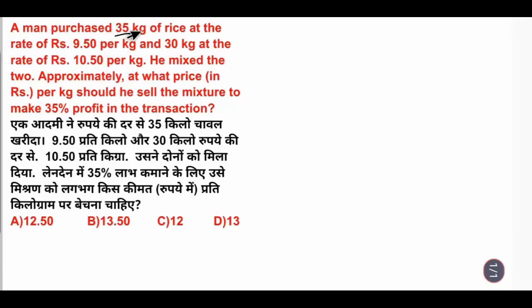A man purchased 35 kg of rice at the rate of Rs. 9.50 per kg and 30 kg at the rate of Rs. 10.50 per kg. He mixed the two. Approximately, at what price per kg should he sell the mixture to make 35% profit in the transaction?